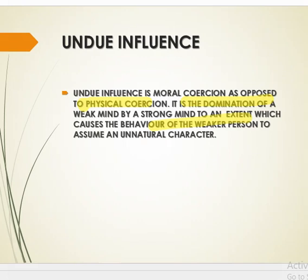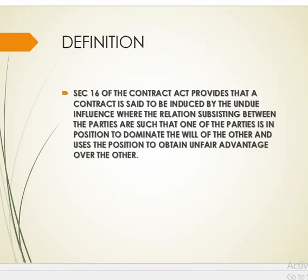Under undue influence, it is the domination of a weak mind by a strong mind to enter into a contract which otherwise he would not have entered. Section 16 of the Contract Act states that a contract is said to be induced by undue influence where the relations subsisting between the parties are such that one of the parties is in a position to dominate the will of the other, and uses that position to obtain an unfair advantage.